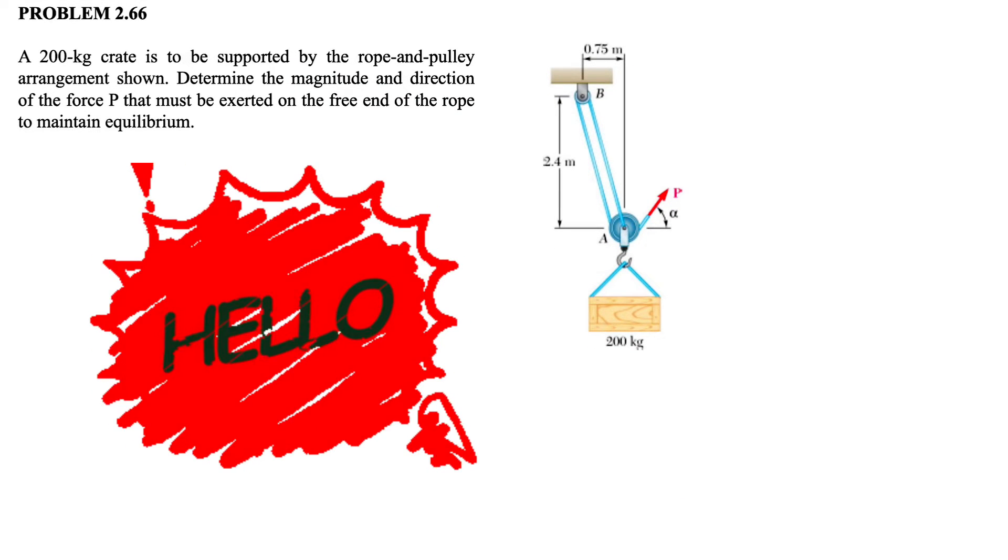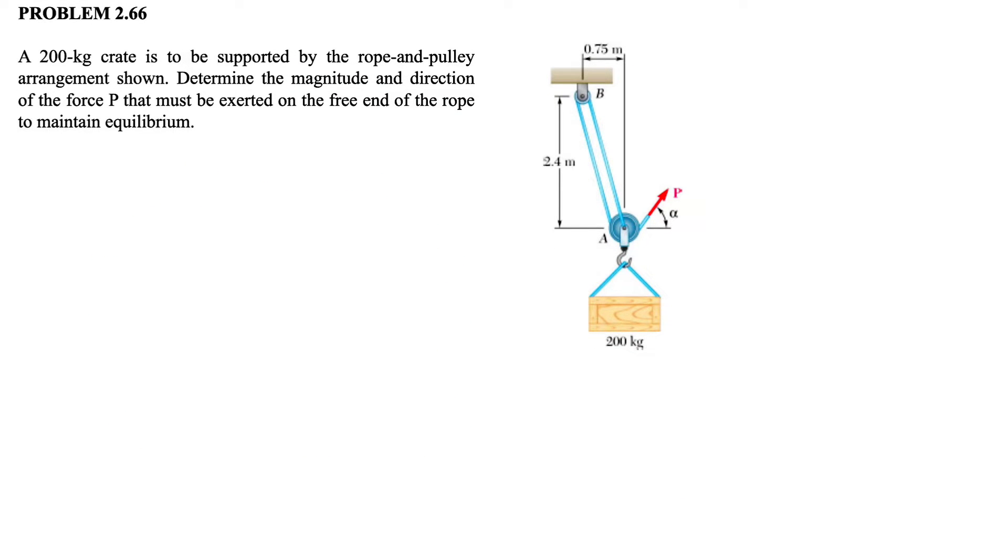All right guys, welcome back to this question. We have a 200 kilogram crate that is supported by a rope and pulley arrangement as shown. We need to determine the magnitude and direction of the force P that must be exerted on the free end of the rope to maintain equilibrium.